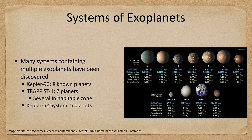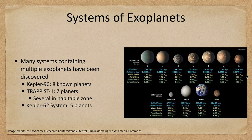We also have the TRAPPIST-1 system, another commonly discussed one. Its orbital periods run from about one and a half days up to about 19 days. All of those orbits are very close to their star — Mercury in our solar system is 0.387 AU, while the furthest TRAPPIST-1 planet is only 0.06 AU. All of these planets are much closer to their star than Mercury, showing you can form a stable planetary system very close to a star.